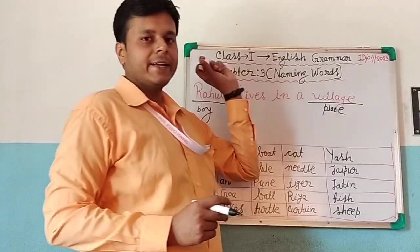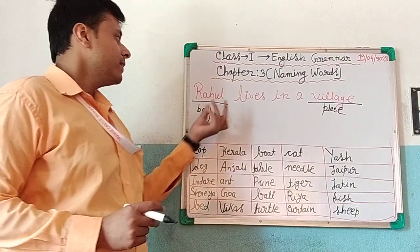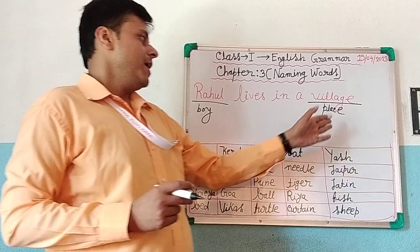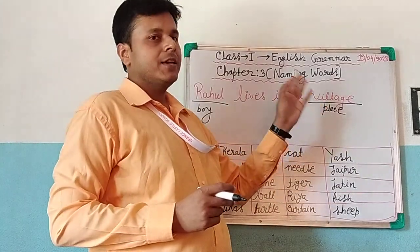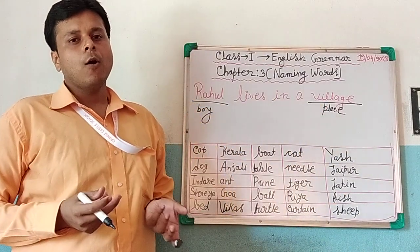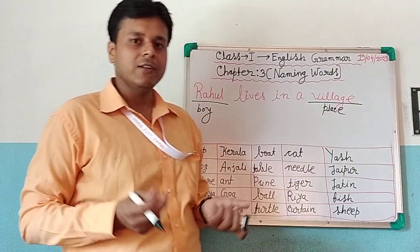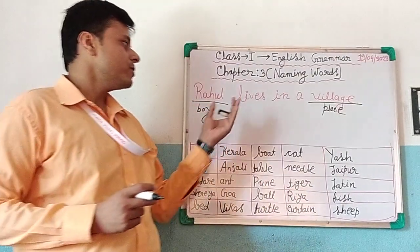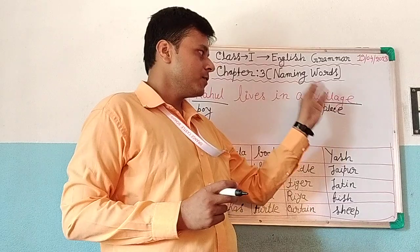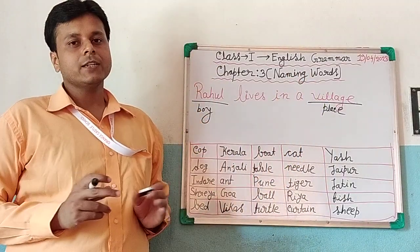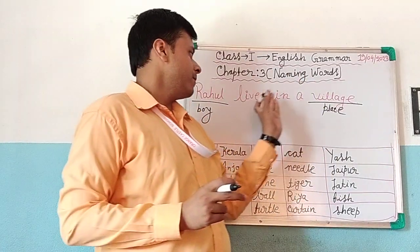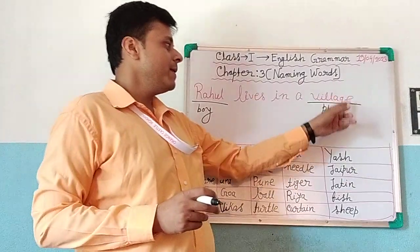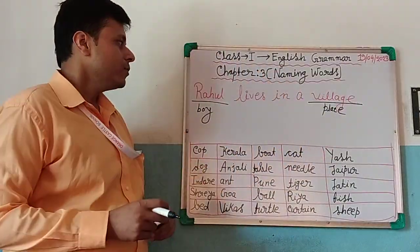So, what we learnt from the sentence? The word that refers to the name of any living thing, any place, any animal, or any object — it can be a living thing, it can be a non-living thing. The name that refers to any object, any person, any animal, or any place is called a naming word.